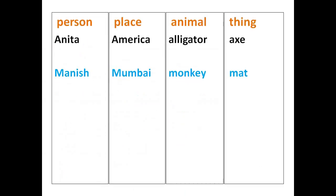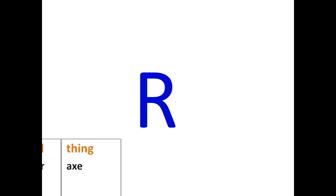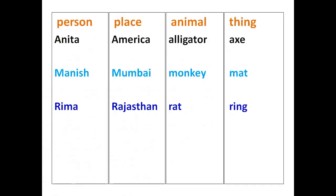Names starting with letter N are Manish, Mumbai, Monkey, Mat. Names starting with the letter R are Reema, Rajasthan, Rat, Rain.